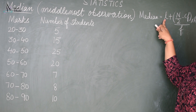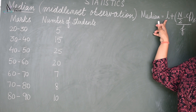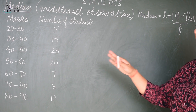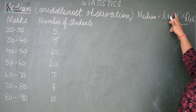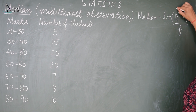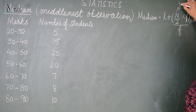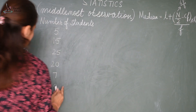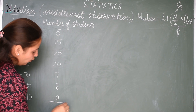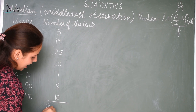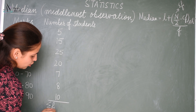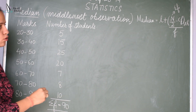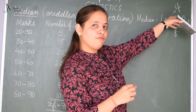Where L is the lower limit of the median class. Our motive is to find out the median class. N/2 is where N is the summation of Fi, that means the sum of all the frequencies. When you add them, you will get the summation of Fi as 90. So N/2 will be 45.